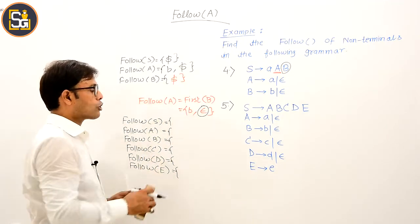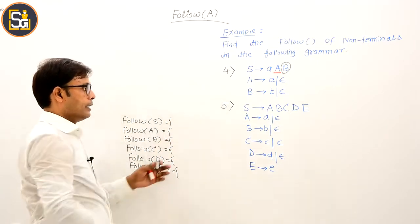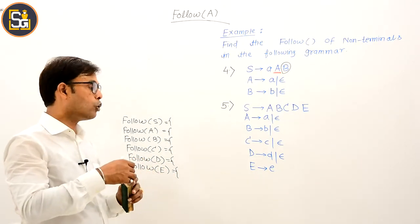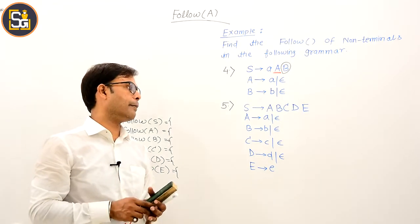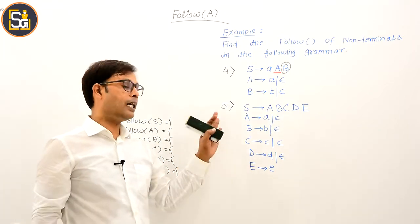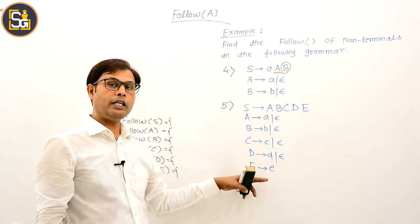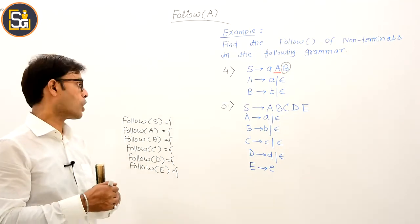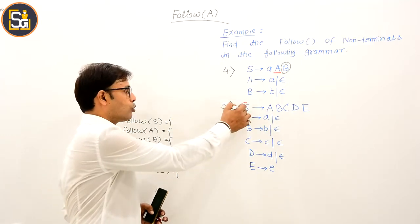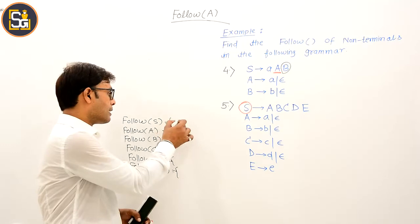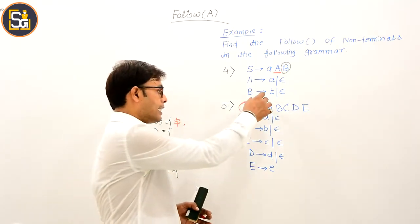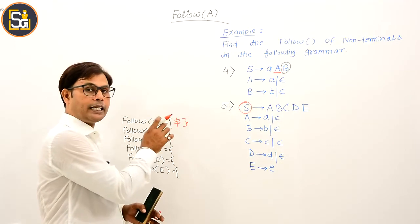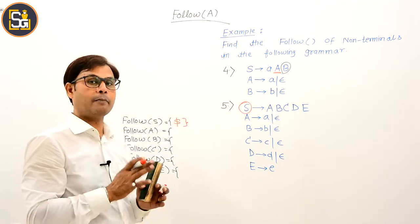Now consider the next question. The non-terminals are capital S, A, B, C, D, and E. The terminals are small a, b, c, d, and e. Epsilon is also present. We need to compute FOLLOW for all of these. Since S is the start symbol, FOLLOW(S) contains dollar. Capital S is not present on the right side of any production, and therefore dollar is the only element in the FOLLOW set of capital S.